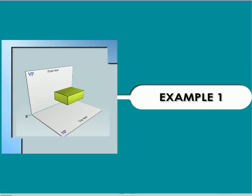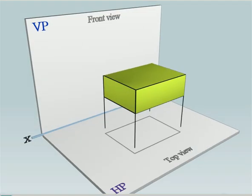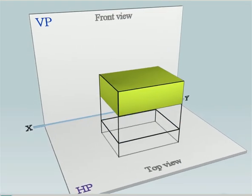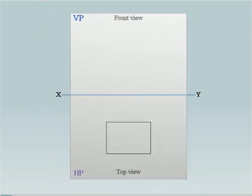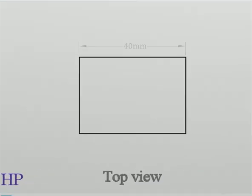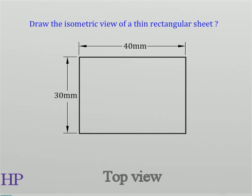Example problem. In this problem, the task is to draw the isometric view of a thin rectangular sheet of size 40 mm by 30 mm with its surface horizontal. The figure also shows a rectangle as the top view.